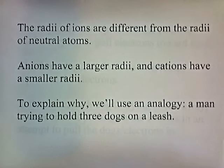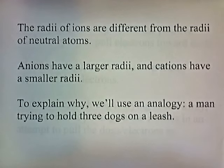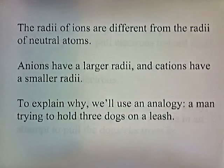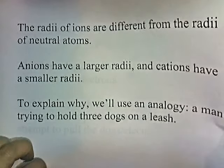Radii of ions are different from the radii of neutral atoms. In a regular atom, the number of protons equals the number of electrons, giving it a neutral charge. When you start adding or removing electrons, it develops a charge. Anions have a larger radius and cations have a smaller radius. To explain why, we'll use an analogy: a man trying to hold three dogs on a leash, representing the positive nucleus trying to pull electrons towards itself.